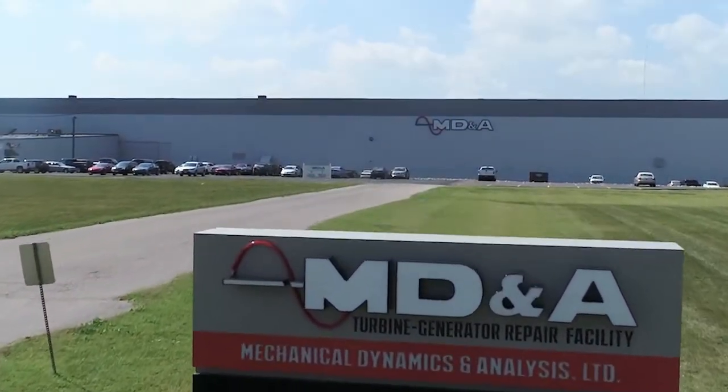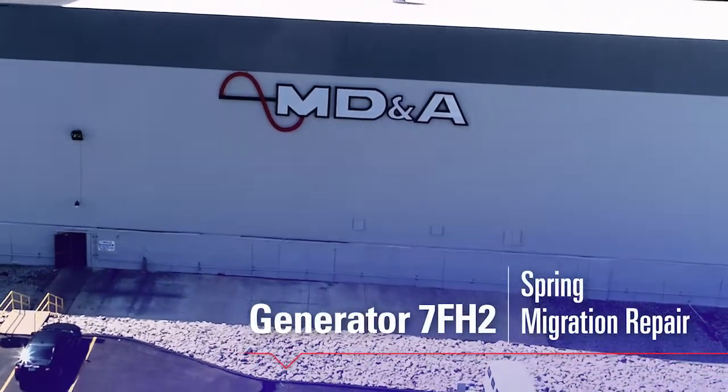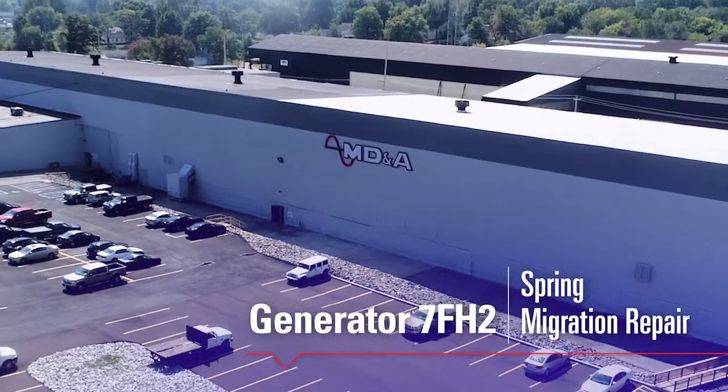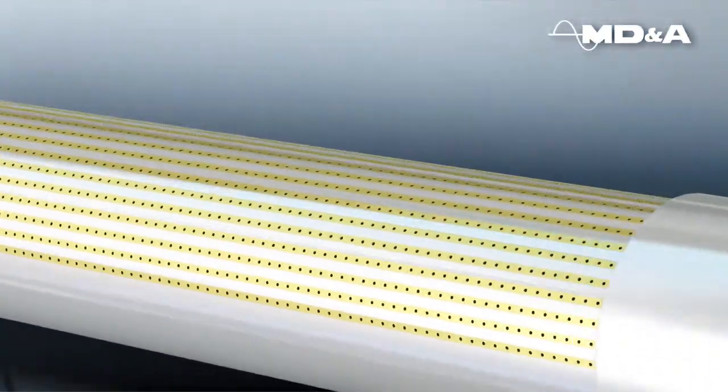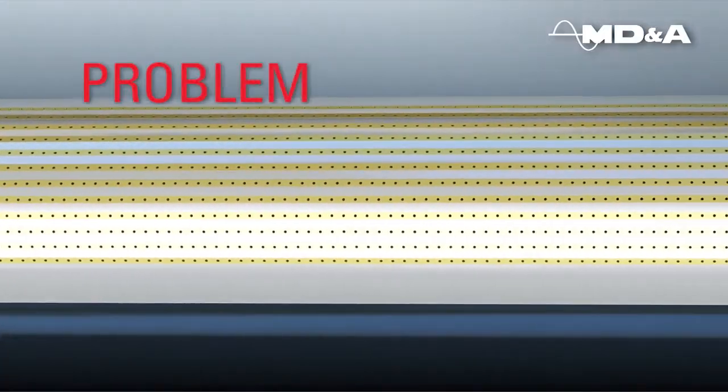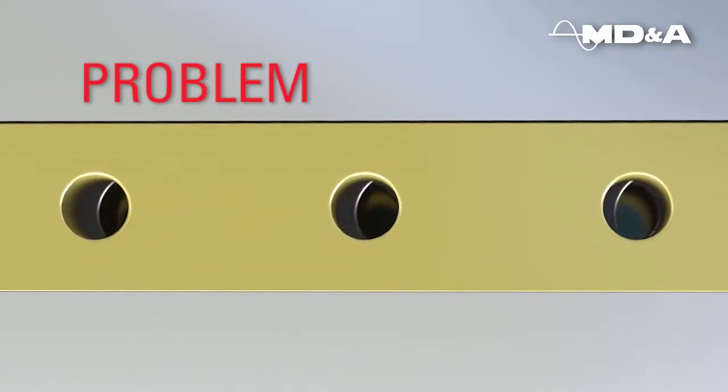MDNA experts offer a unique patented repair process that eliminates 7-FH2 spring migration and restores your generator to full operation. This problem occurs during normal field operation as the springs under the full length of amortiser migrate axially within the slot. The migration of the springs can lead to blockage of the radial ventilation passages.